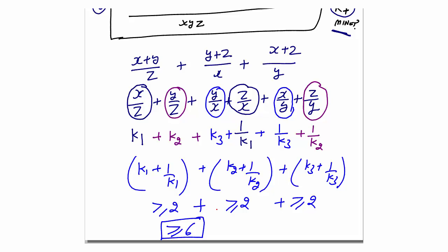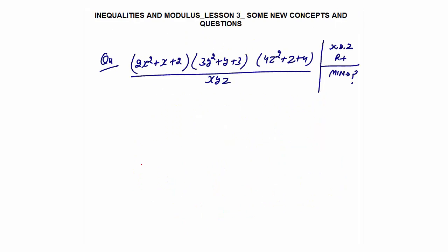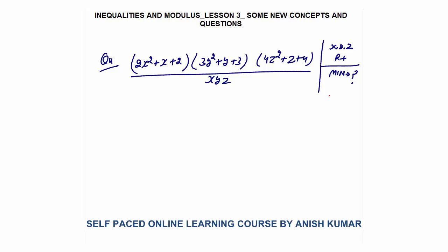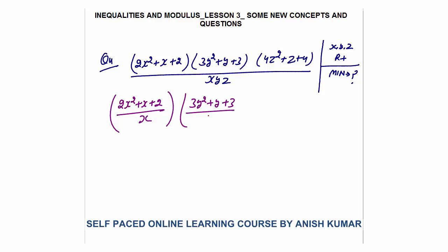The minimum value is 6; the maximum can go to infinity depending on the values of x, y, z. Question 4: A similar expression is given — find the minimum value. The expression can be split as (2x² + x + 2)/x + (3y² + y + 3)/y + (4z² + z + 4)/z.